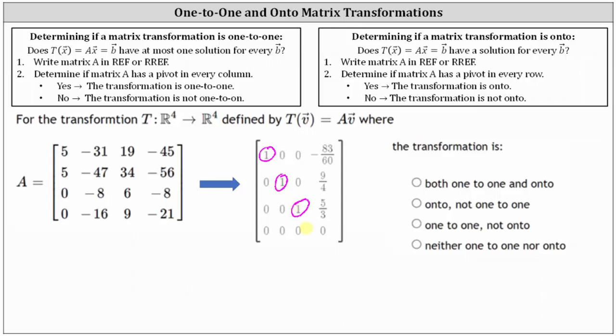We also do not have a pivot in every row, and therefore the transformation is also not onto. We select neither one-to-one nor onto.